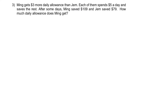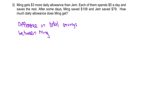First step, we have to calculate the difference in total savings between Ming and Jem. The total difference in savings would be $109 minus $79, which gives you $30.